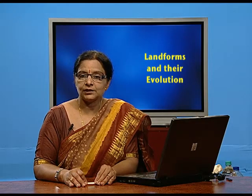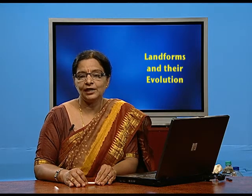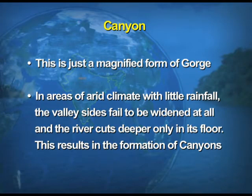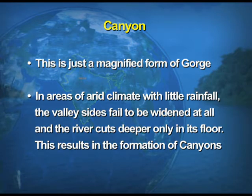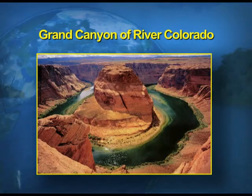Another feature is the canyon. A canyon is just a magnified form of gorge. In areas of arid climate with little rainfall, the valley sides fail to be widened at all and the river cuts deeper only in its flow, resulting in the formation of a canyon. The best example is the Grand Canyon of the River Colorado in the United States of America. You can view the Grand Canyon on screen.